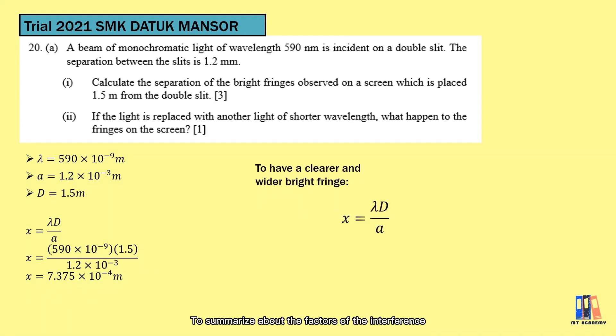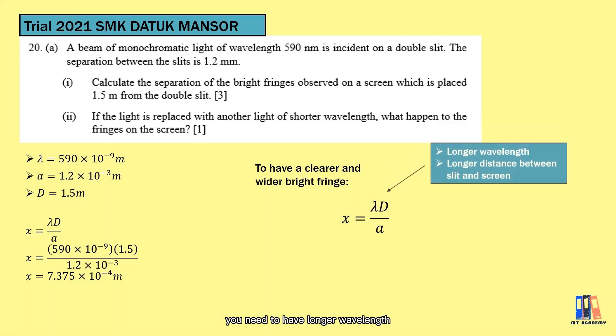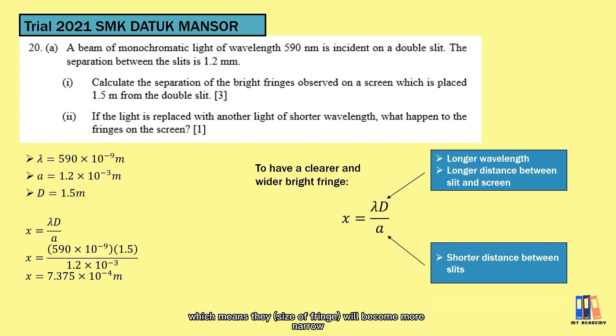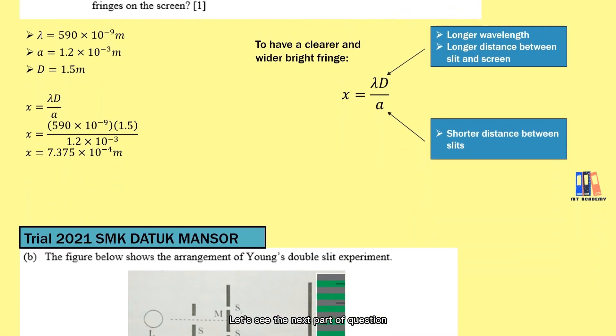To summarize the factors of interference, if you want a clearer pattern with wider bright fringes, you need longer wavelength, longer distance between the slit and screen, and shorter slit separation. Question 2 mentioned another line with shorter wavelength. This will produce shorter fringe separation, which means they will become more narrow. Let's see the next part of the question.